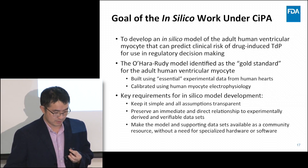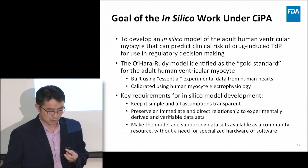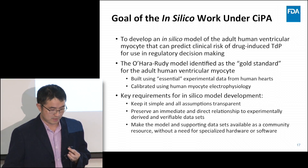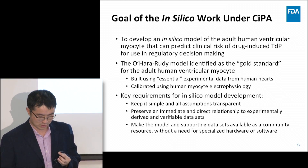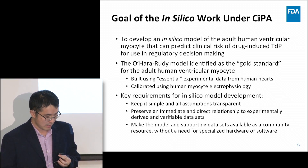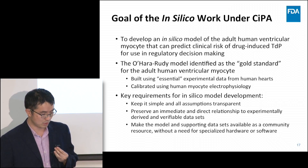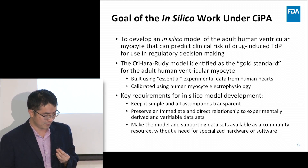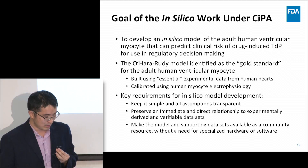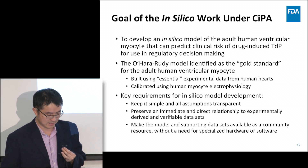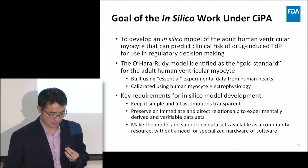The key requirements for encyclical model development include: keeping it simple with all assumptions transparent, preserving an immediate and direct relationship to experimentally verifiable datasets, and making the model and supporting datasets available as a community resource.